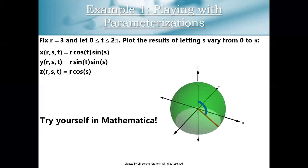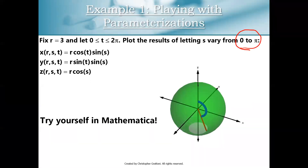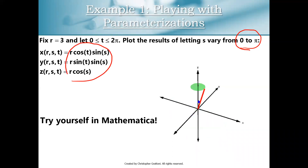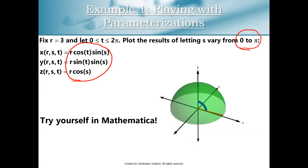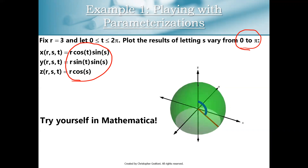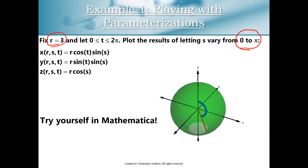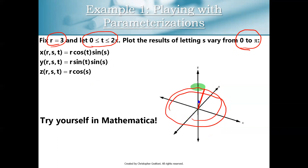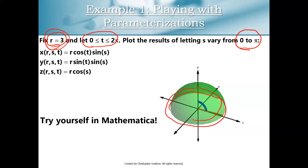The first thing I want to start with is illustrate why s varies from zero to pi when we parameterize a sphere in three-dimensional space. From the previous video, the standard parameterization for a sphere in 3D space is: r cosine(t) sine(s), r sine(t) sine(s), r cosine(s). It's probably already clear why for a sphere of radius three you would need r equals three, and why t goes from zero to two pi — t needs to go from zero to two pi to give full circular cross sections of our sphere.